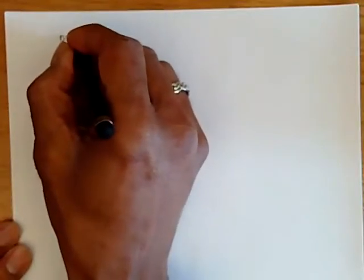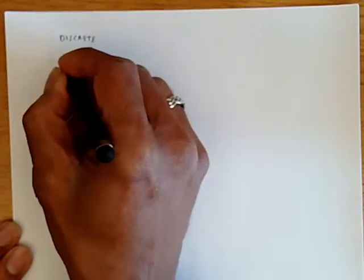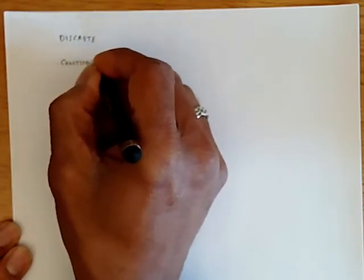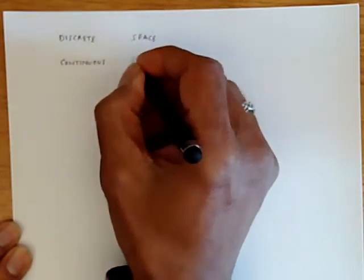I'd like to now talk about what are called discrete and continuous space and time stochastic processes. So we have discrete and continuous space and time.